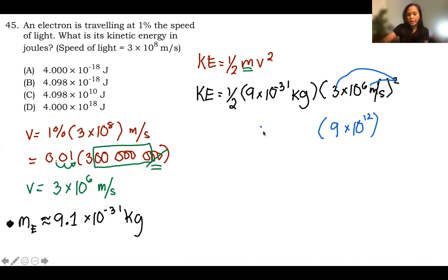And then this one, we have 9 times 10 to the negative 31 and one-half. Now let's combine this. This is 10 to the negative 19.